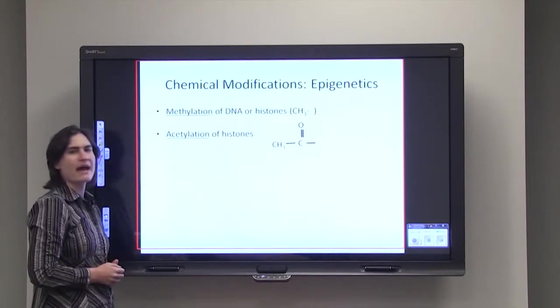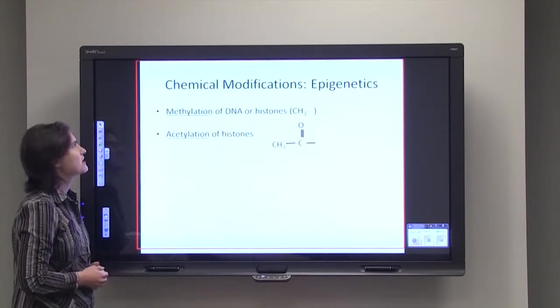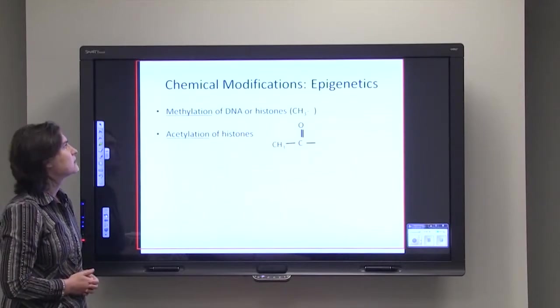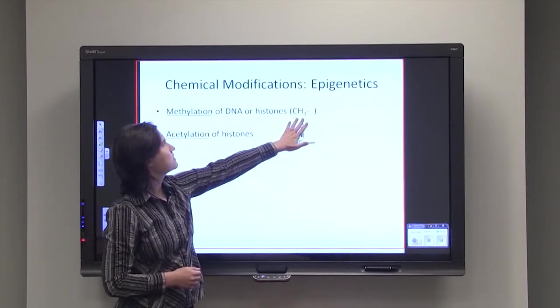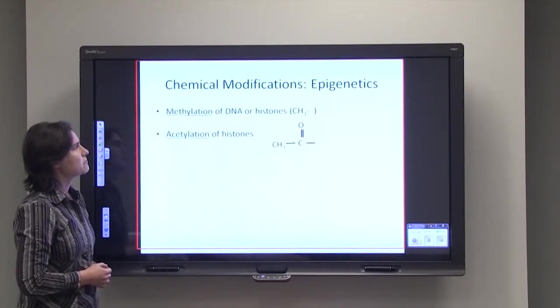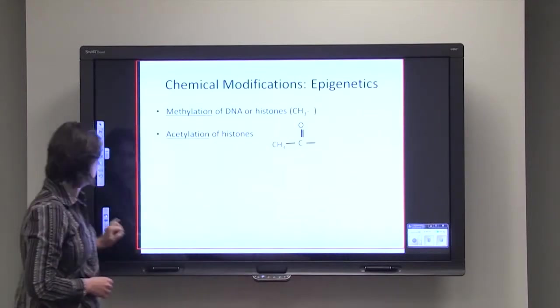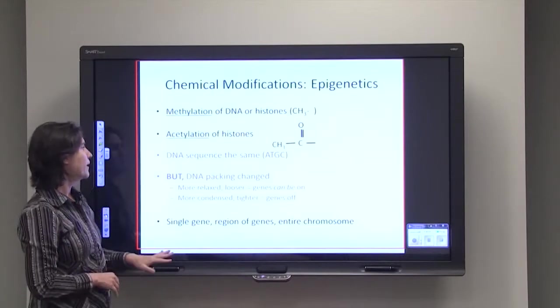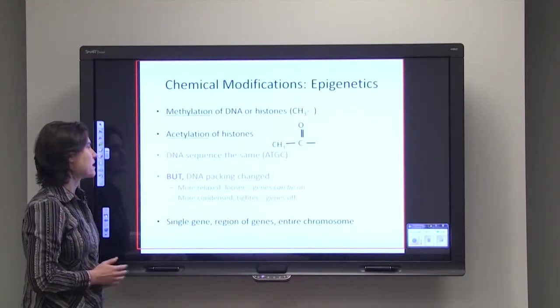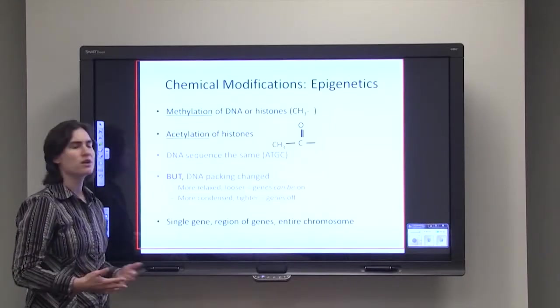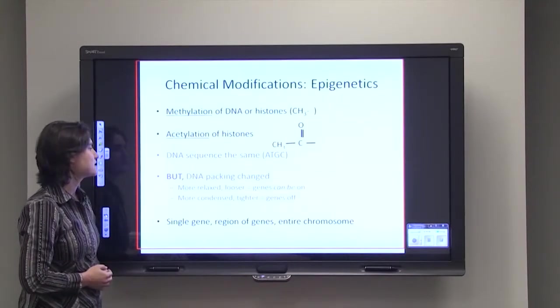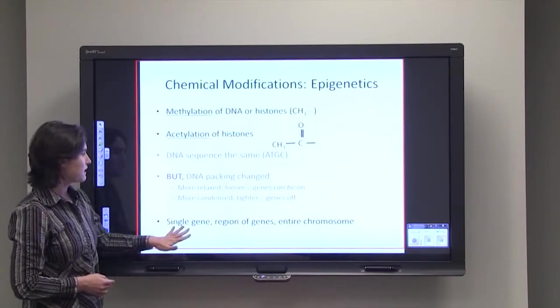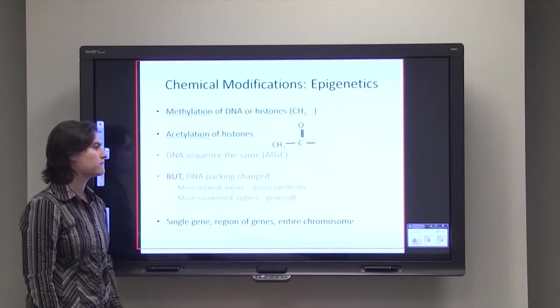So one way that this DNA packing can be controlled is by chemical modifications or epigenetics. Two different types of chemical modifications can take place: methylation and acetylation. Methylation is where you add a CH3 group to either the DNA or the histones. And acetylation can take place on histones where you add this particular chemical moiety. Now, the sequence of the DNA is absolutely the same. So we haven't mutated it at all, but the DNA packing has changed. So in some cases, these modifications will cause the DNA to be more relaxed or looser, and so those genes might be more likely to be turned on. In other cases, these modifications make the DNA more condensed, more tight, so those genes are much more likely to be turned off. So this can affect a single gene, a region of genes, or the entire chromosome.